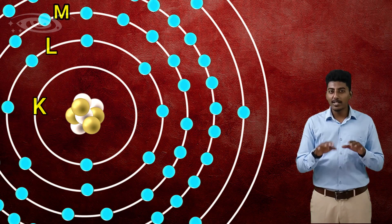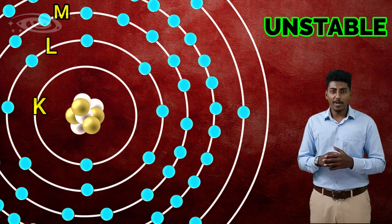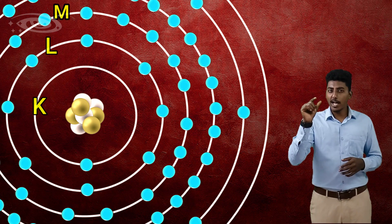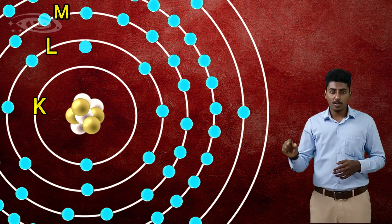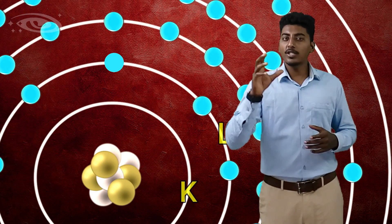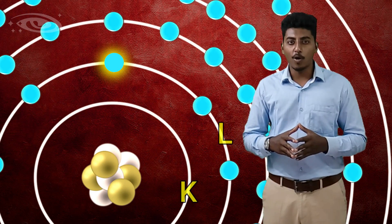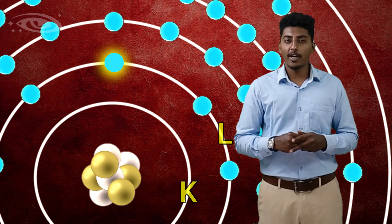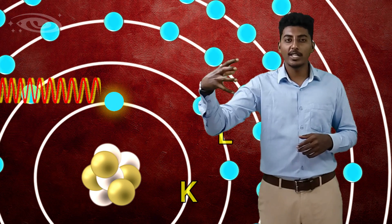To fill that vacancy, the L-shell electron accelerates and drops down to fill the K-shell vacancy. During this acceleration, the potential energy of the L-shell electron loses some amount of energy into characteristic x-rays.